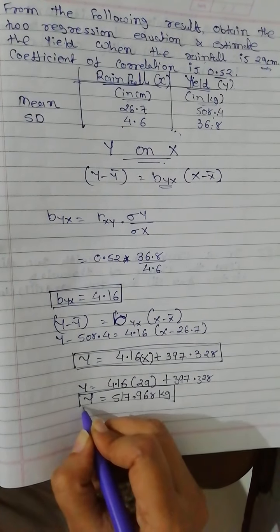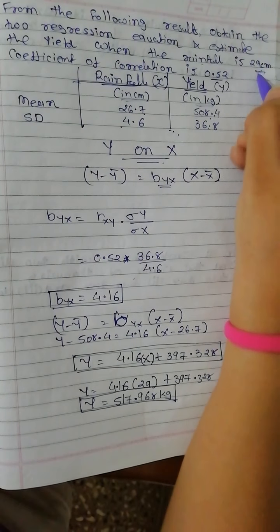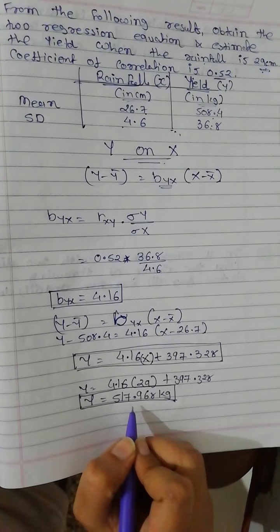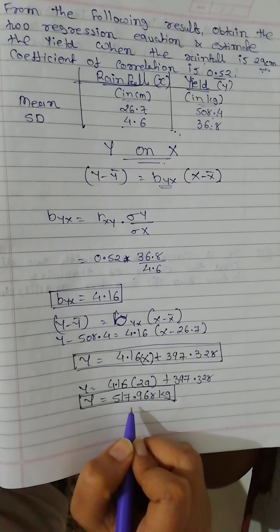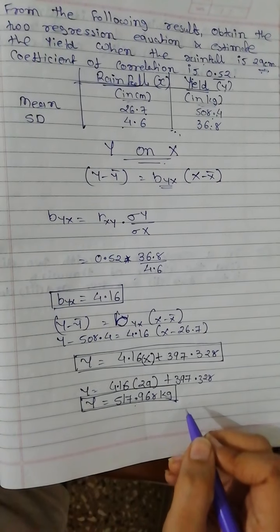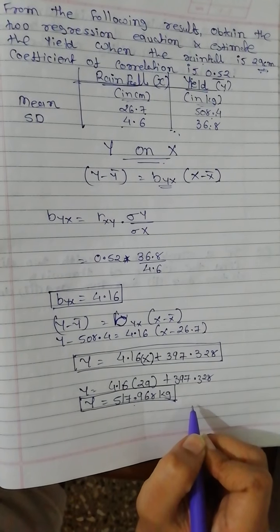So you can say when rainfall is 29 centimeter, the yield is 517.968 kg. That's it. We will meet soon in the next session.